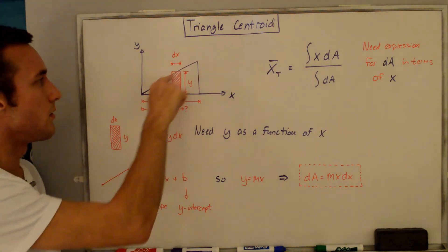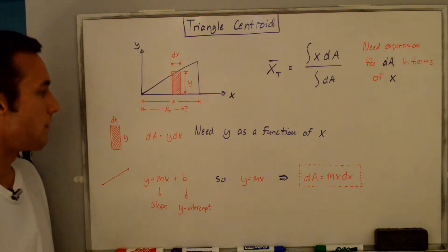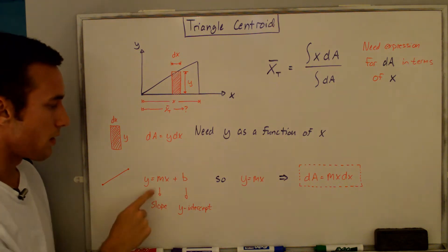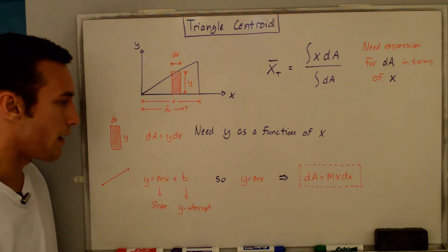We can just use the equation of the line, the upper hypotenuse of this triangle. We can say that y equals mx plus b, where m equals the slope and b is the y-intercept.